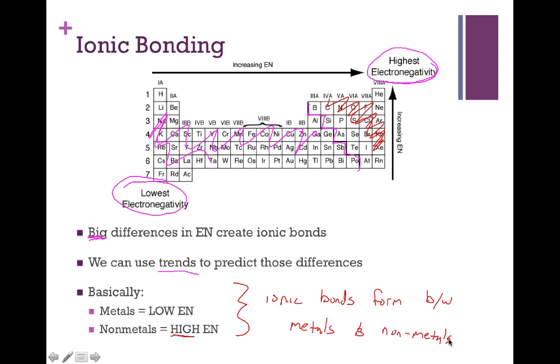So when a metal bonds to a non-metal, that will create the significant difference in electronegativity that we're looking for. It will allow the atom with the bigger electronegativity, the non-metal, to take the electron and will create an ionic bond.